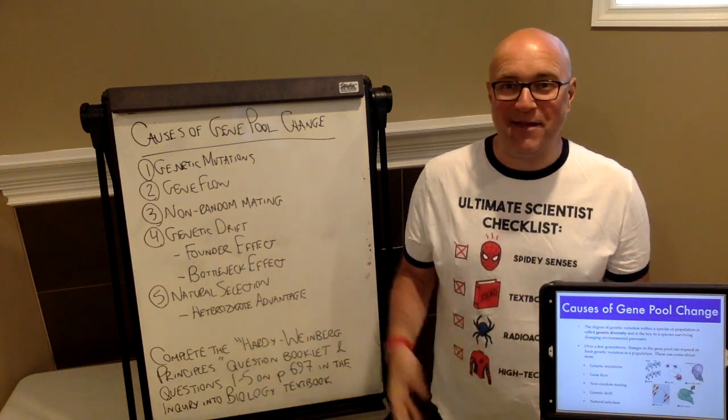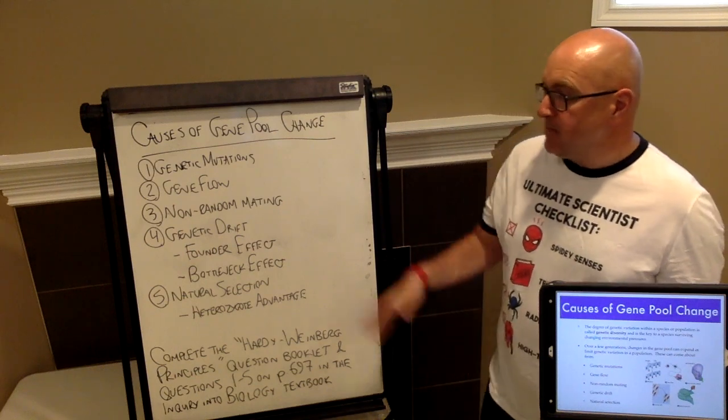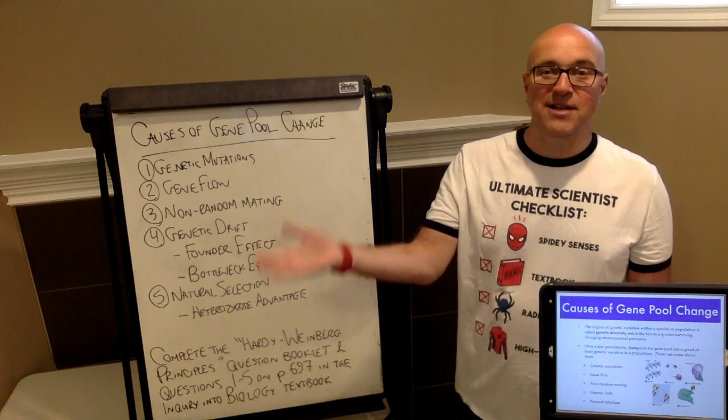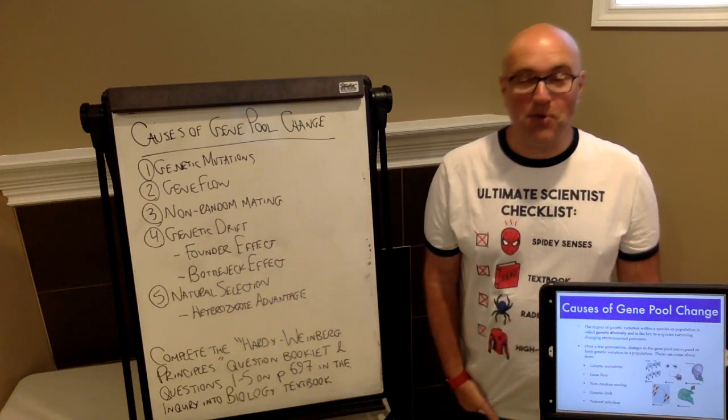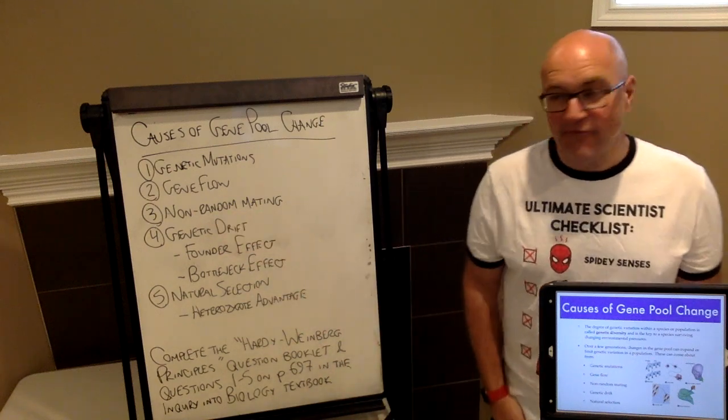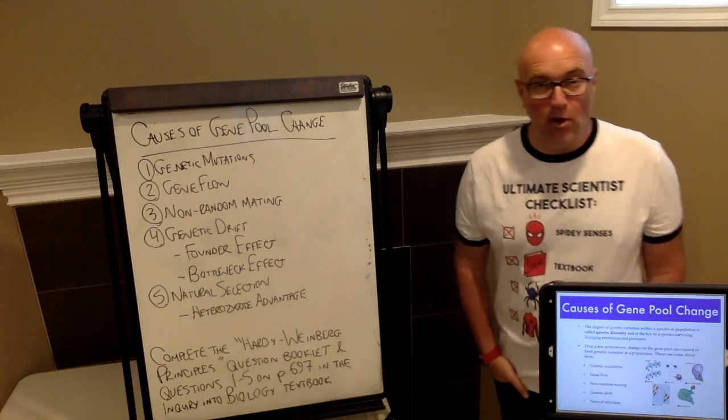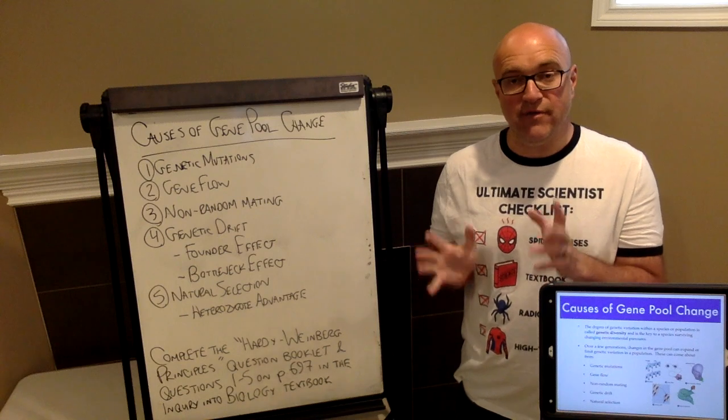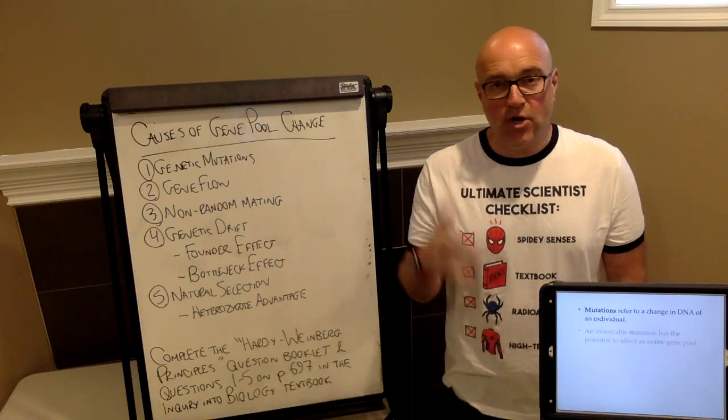The five things that I'll be discussing today that cause changes to gene pool configuration are going to be genetic mutations, gene flow which is essentially migration, non-random mating, genetic drift, and natural selection. All of these can play a role in the change of the frequencies of alleles in a gene pool.